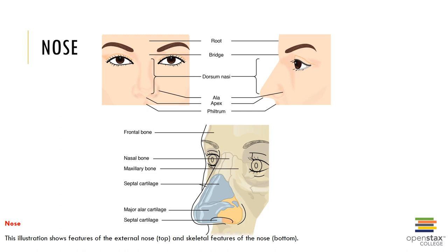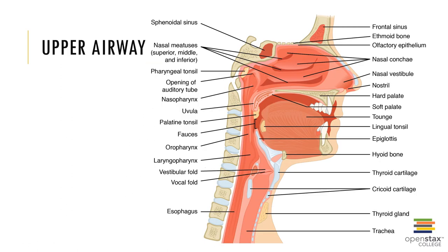Other structures of the nose consist of the apex, dorsum nasi, and root. The upper airway structures consist of a multitude of structures important in respiration, such as the paranasal sinuses, which include the maxilla, frontal, ethmoid, and sphenoid bones, which contain hollow membrane-lined cavities called sinuses.